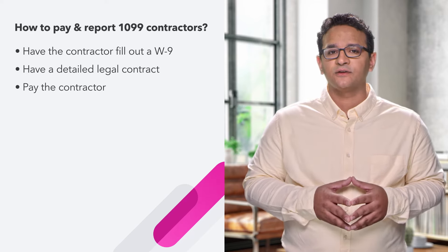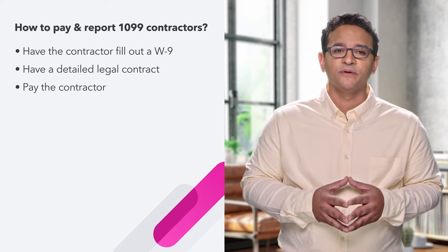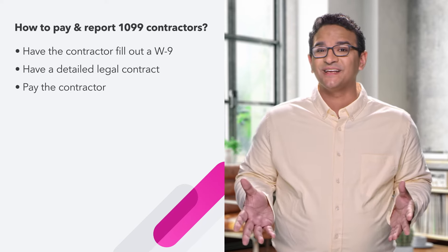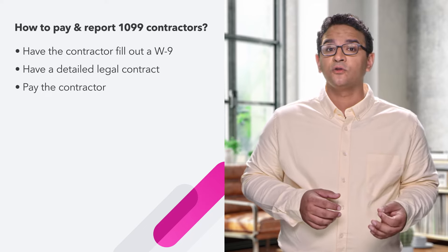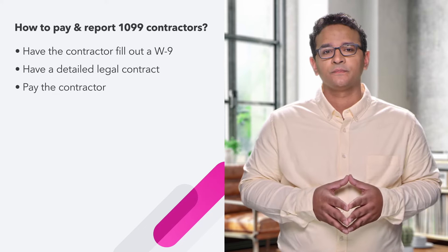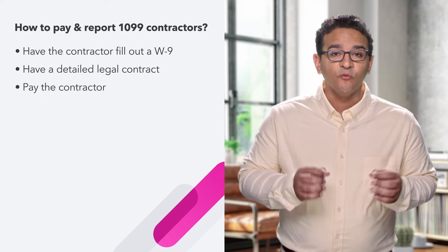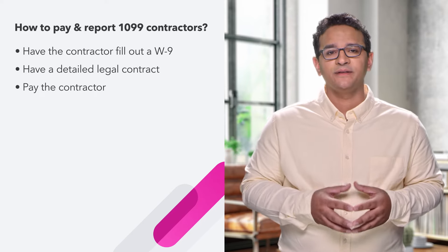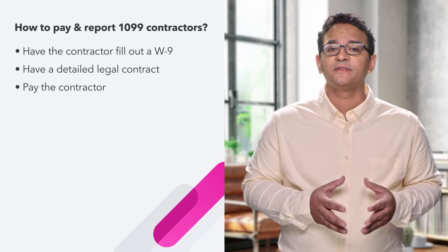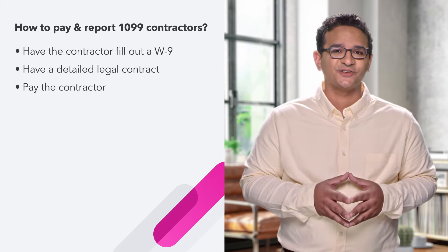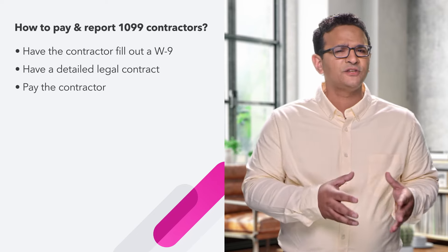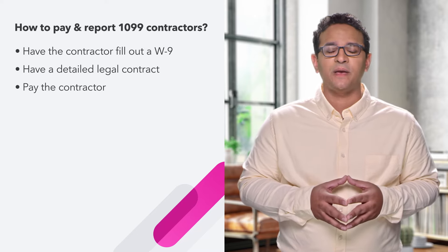Next, you may pay your contractor using whichever method you prefer — cash, check, direct deposit, cash transfer apps, etc. Your options include using payroll software like Intuit QuickBooks. Make sure you keep strong records of when and how these payments were disbursed. If the W-9 contains a voluntary withholding or you have received instructions from the IRS to withhold money from those payments, make sure you keep that in mind before actually issuing those payments.